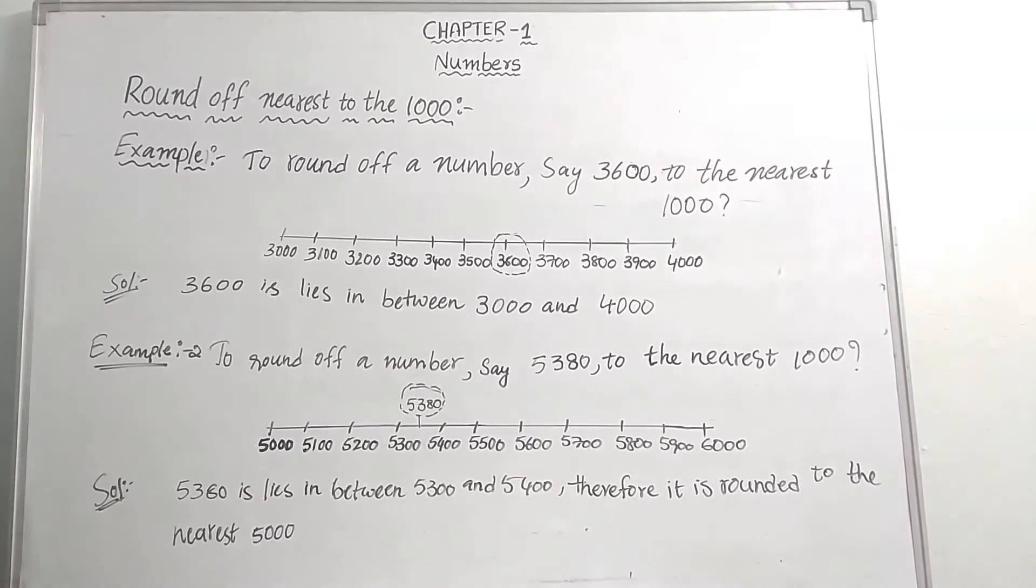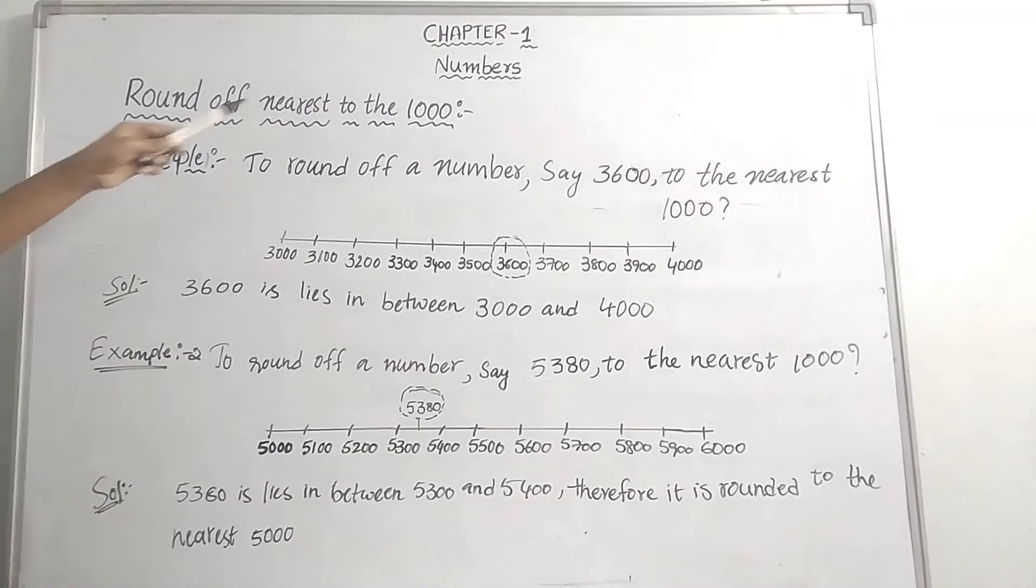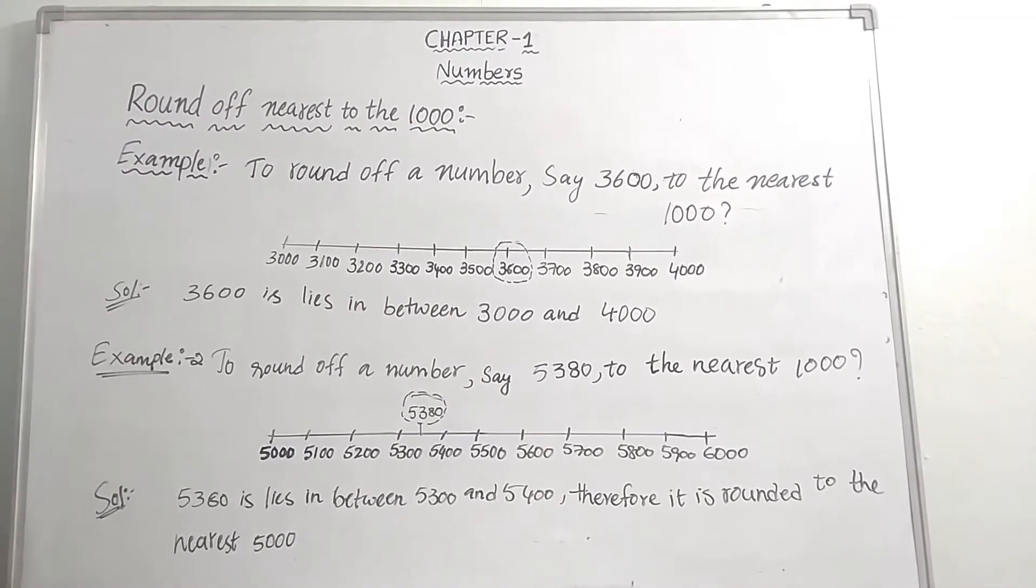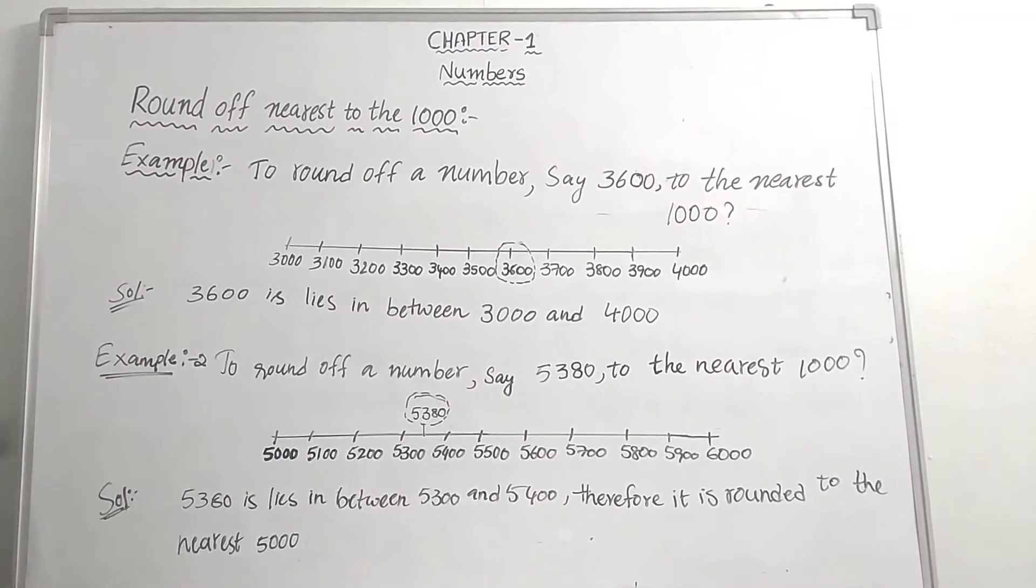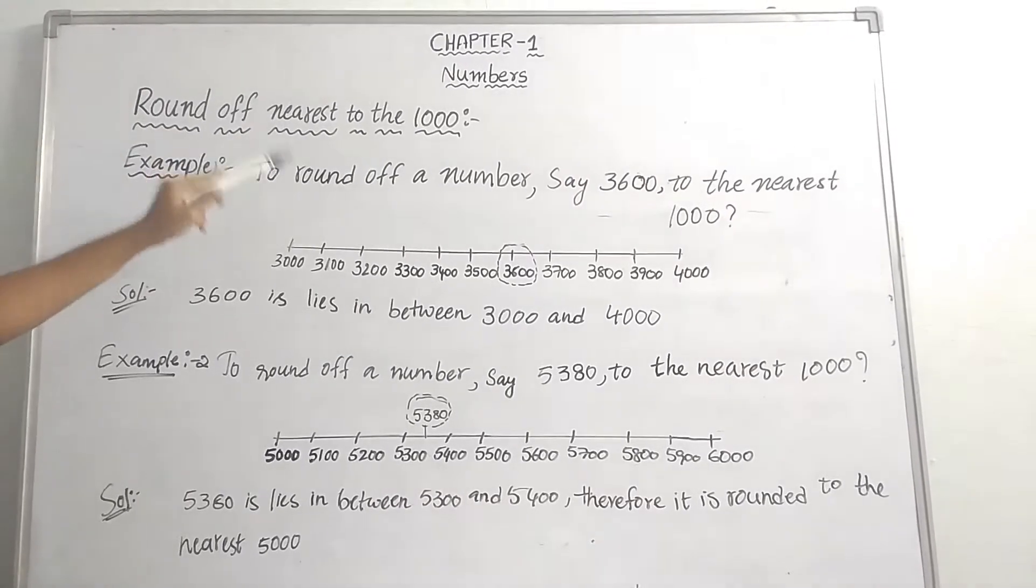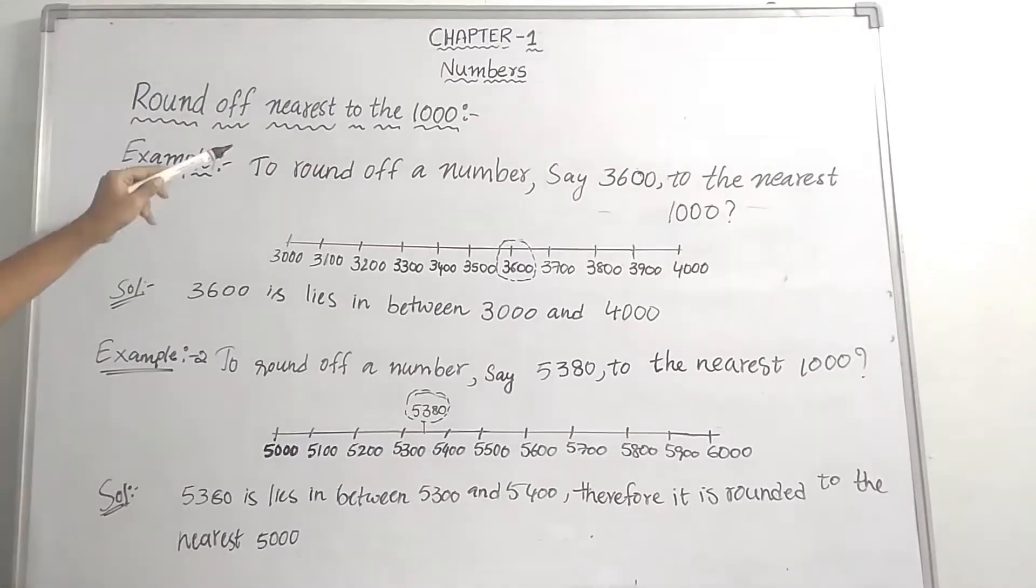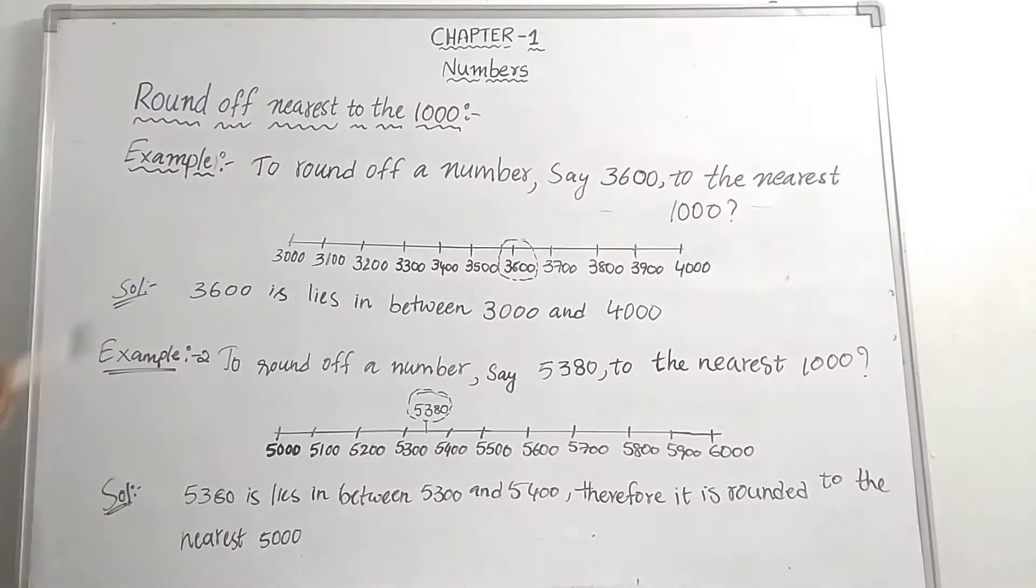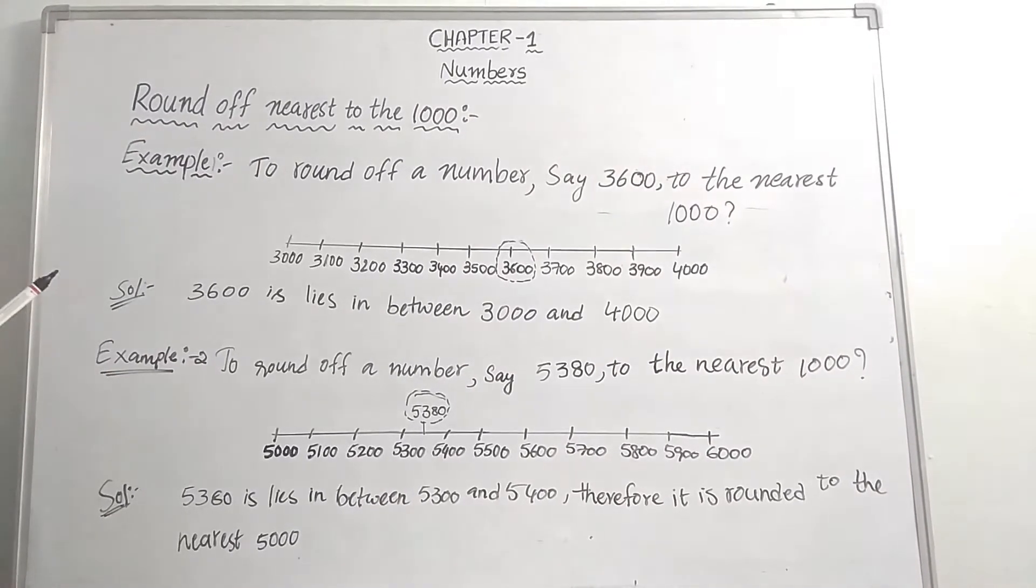Today we are discussing rounding to the nearest thousand. In previous classes, we learned about rounding to the nearest hundred and rounding to the nearest ten. Now, rounding to the nearest thousand. This is the ending of the chapter on numbers.